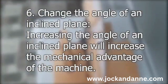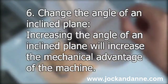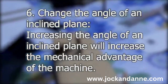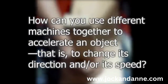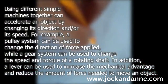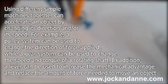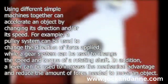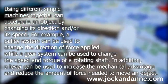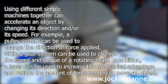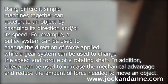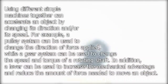Number 6: Change the angle of an inclined plane — increasing the angle will increase the mechanical advantage of the machine. Using different simple machines together can also accelerate an object by changing its direction and/or speed. For example, a pulley system can change the direction of force applied, while a gear system can change the speed and torque of a rotating shaft. A lever can increase mechanical advantage and reduce the force needed to move an object.